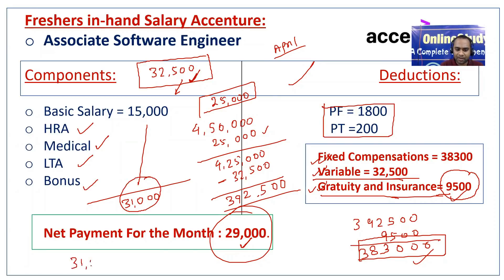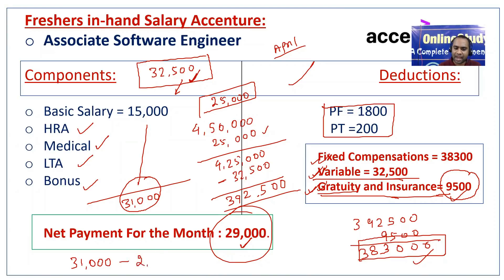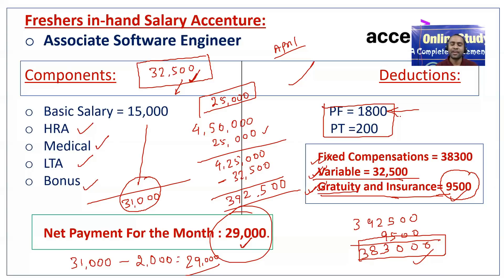Your basic salary, HRA, medical, LTA, and bonus — if you add everything it will come to around 31,000 per month, because variables are not considered as they come only once a year. Gratuity and insurance money is deducted, and gratuity is paid only if you work for five years in the company. So from 31,000, minus 2,000 for PF deduction, gives you 29,000 rupees in hand. Note that PF is your money only — you will get it later. The joining bonus you get when you join, and the 32,500 variable comes yearly based on performance.